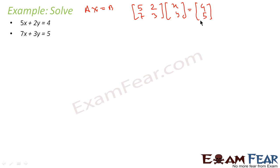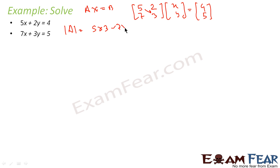Once I am done with this, the next step is to check whether the system has a solution or not. To do that, I have to find the determinant of A, which is nothing but 5 into 3 minus 7 into 2 — that is 15 minus 14, which equals 1, and that is not equal to 0.